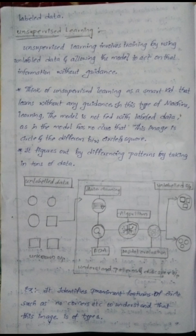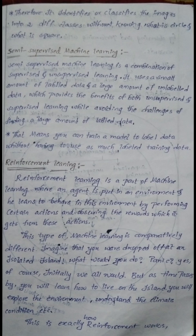In unsupervised learning, the model identifies prominent features of circles — such as having no corners — to understand the image type. It then classifies images into two different classes without being told what is a circle and what is a square. Classification is done purely based on features.